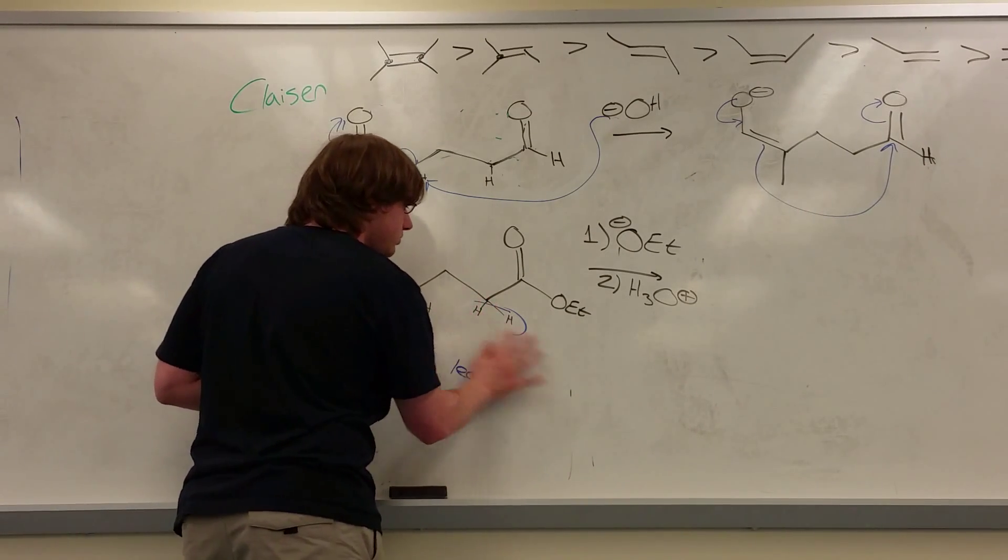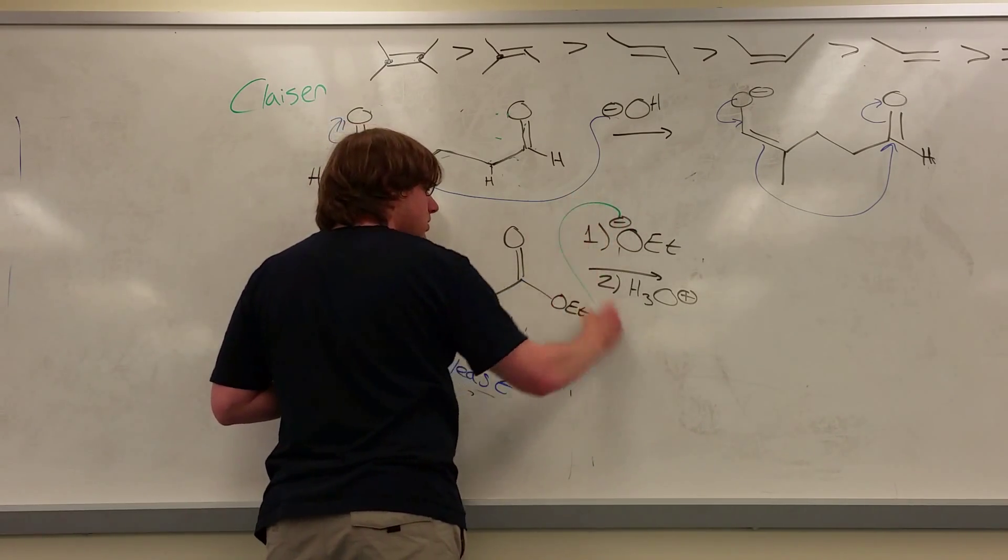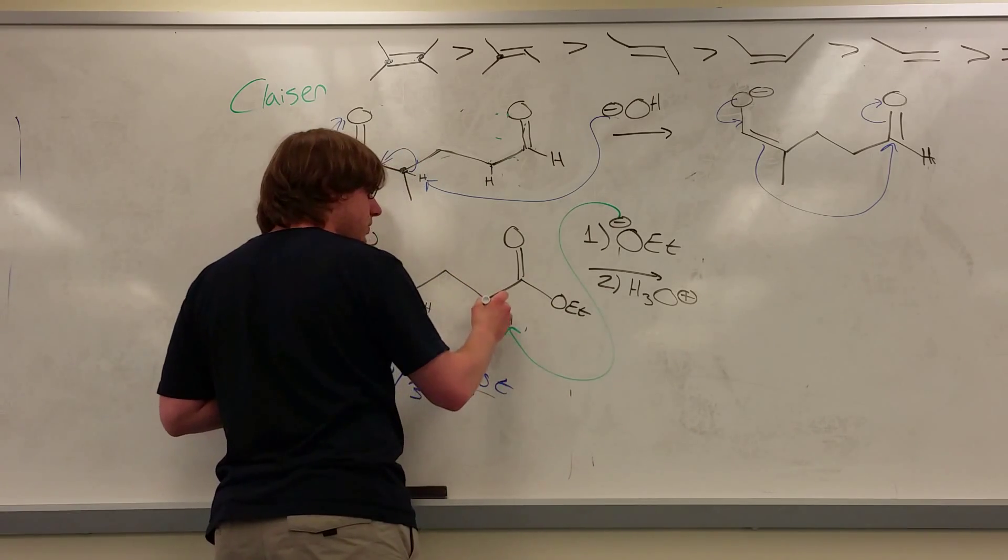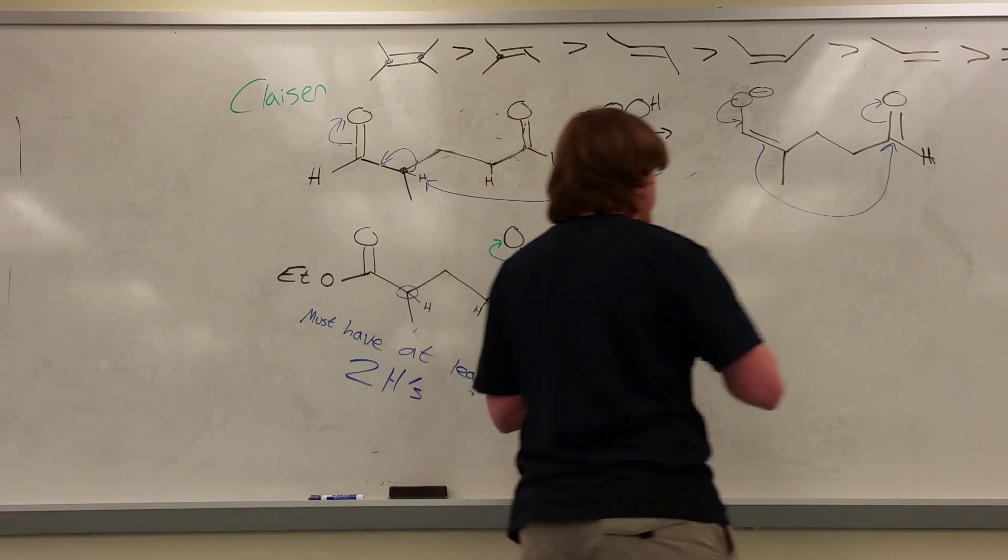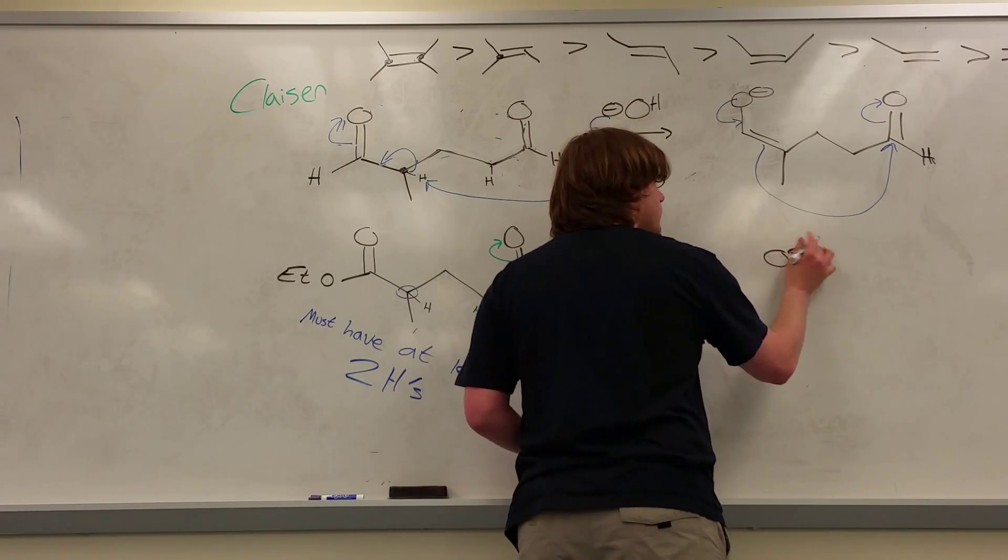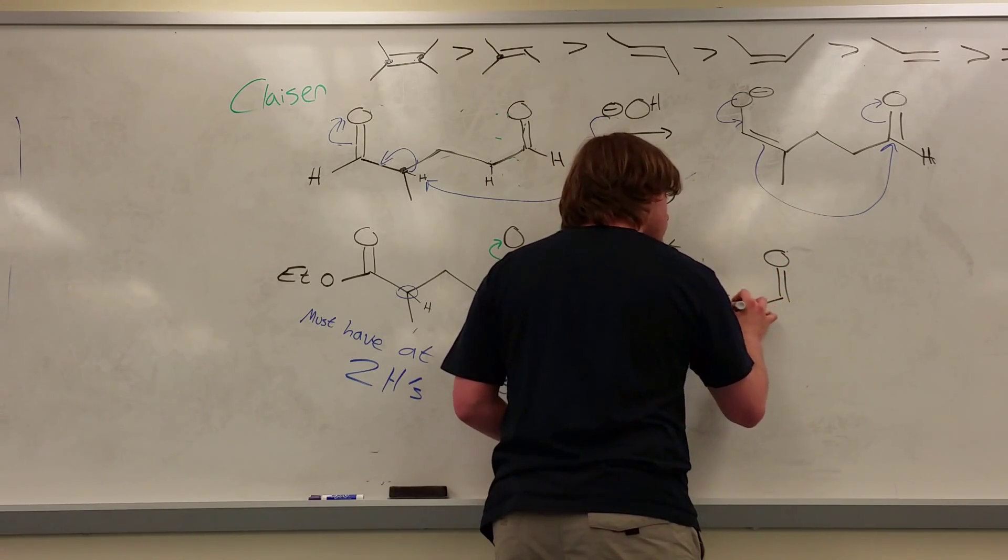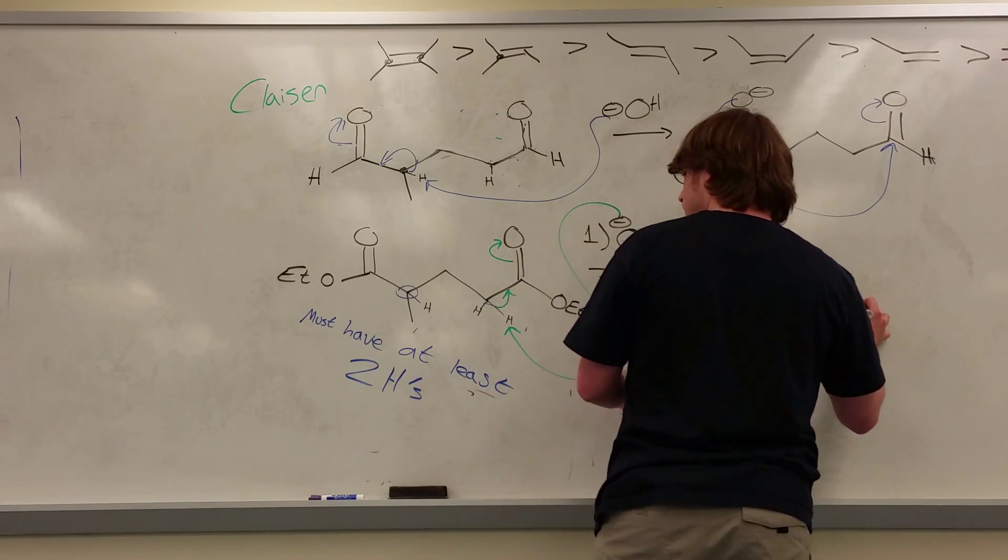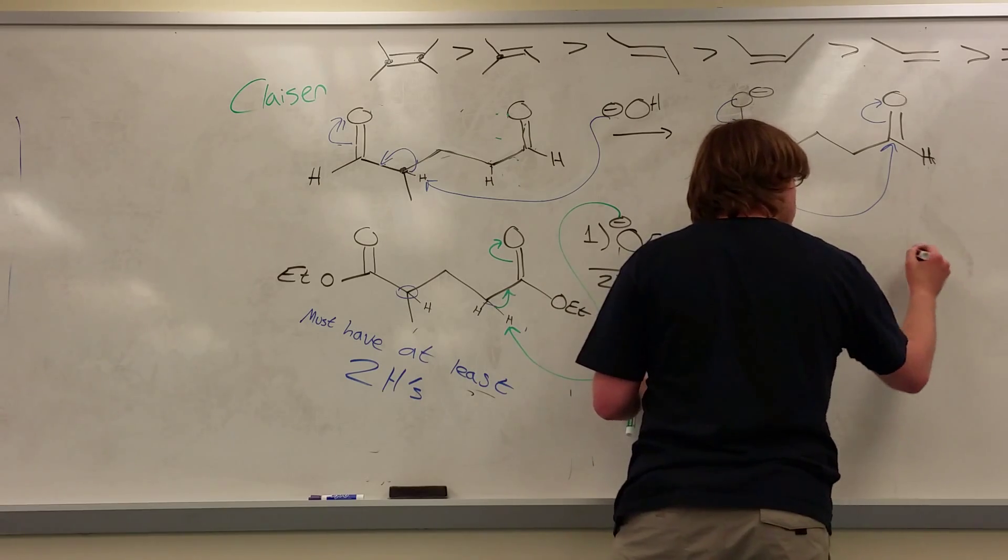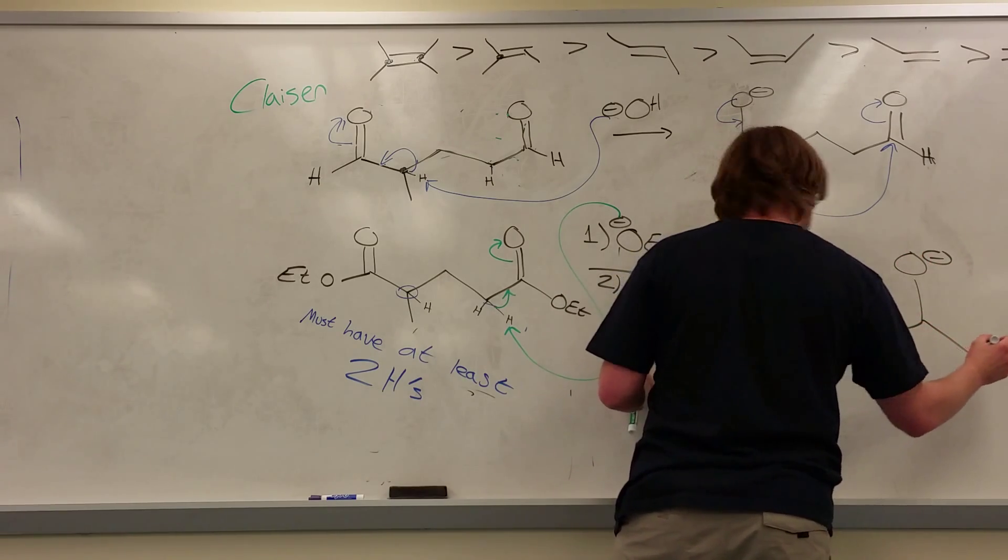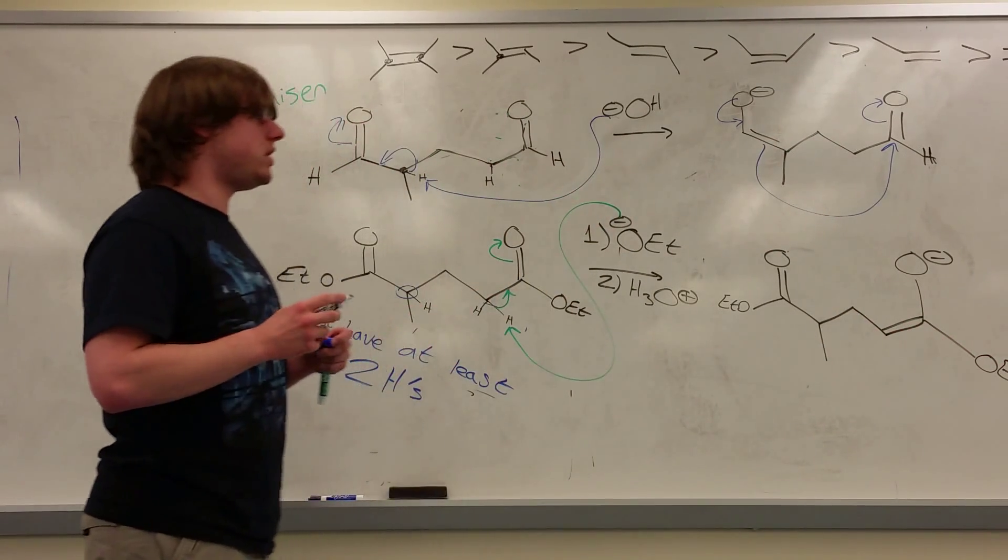And so, our base will come in, attack the alpha proton, this will swing up, and this will go up, and you'll form your enolate. You'll form your enolate on the right side. So that would be the enolate I form.